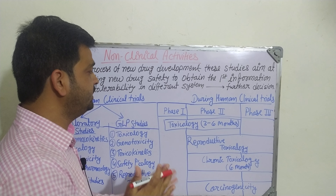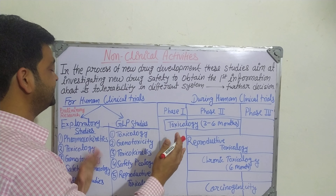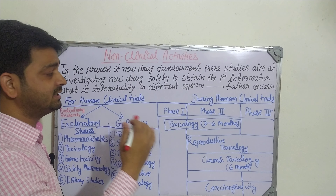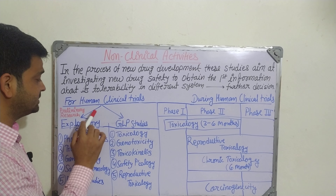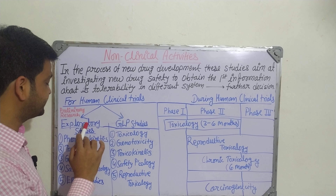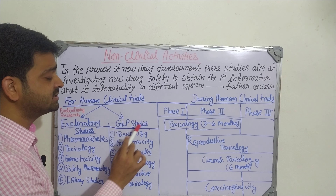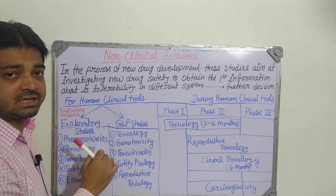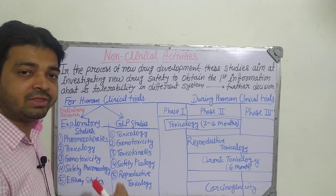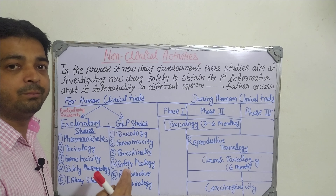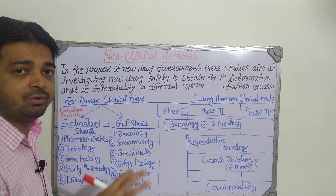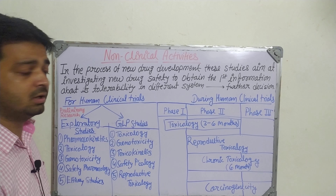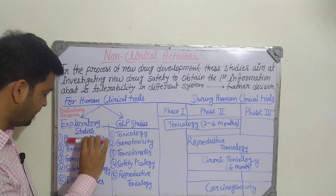Non-clinical activity can be done in two stages: first, before human clinical trials, and second, during human clinical trials. Before clinical trials, there are two parts: exploratory studies and GLP (Good Laboratory Practice) studies. Exploratory studies are essentially preliminary research — we want to know more about the chemical entity, how the candidate drug is going to behave, and what its nature is, since it is entirely new. This allows us to proceed toward preclinical study in animal models and then in human volunteers.